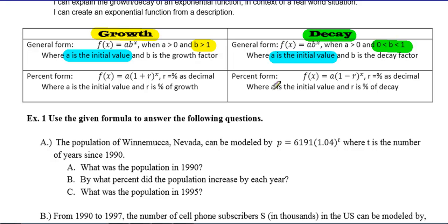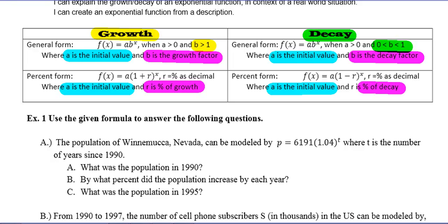Notice that's the same in both cases, even if you're talking about percents. A is the initial value always. B is referred to when we talk about growth as the growth factor, or decay factor if it's decay. And if it's a percent problem, we use R, which is the percent of growth.